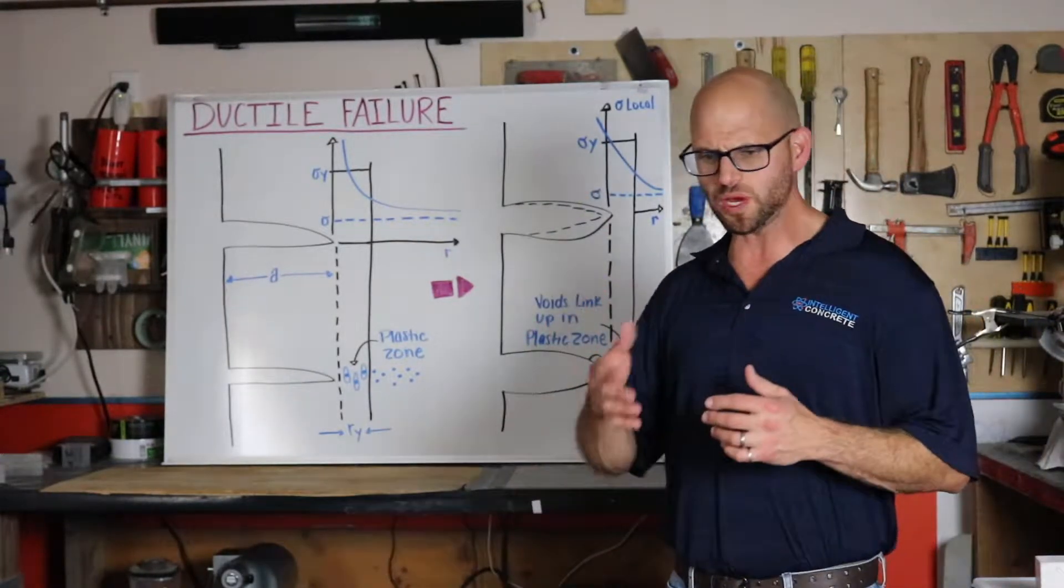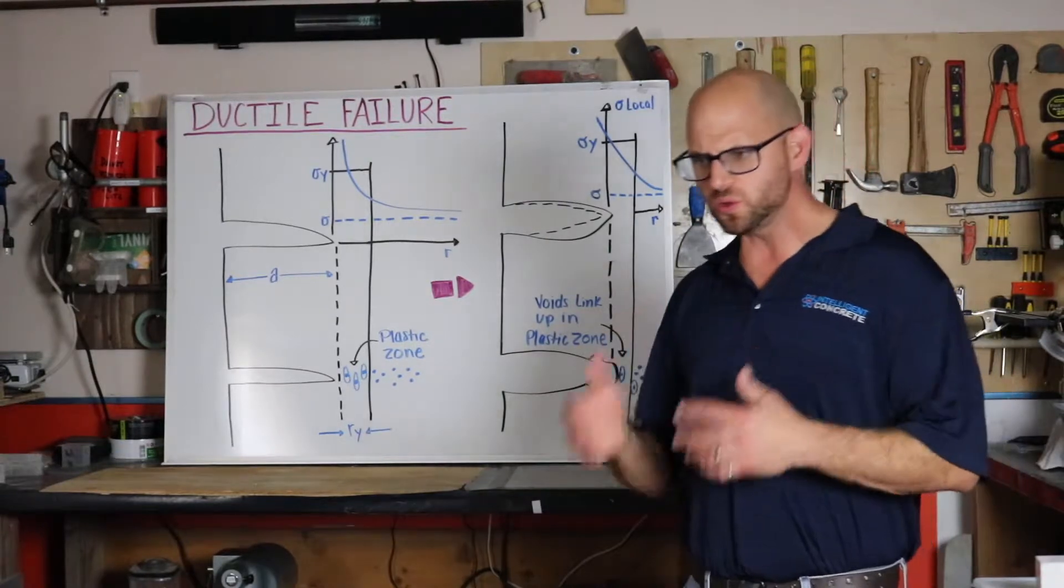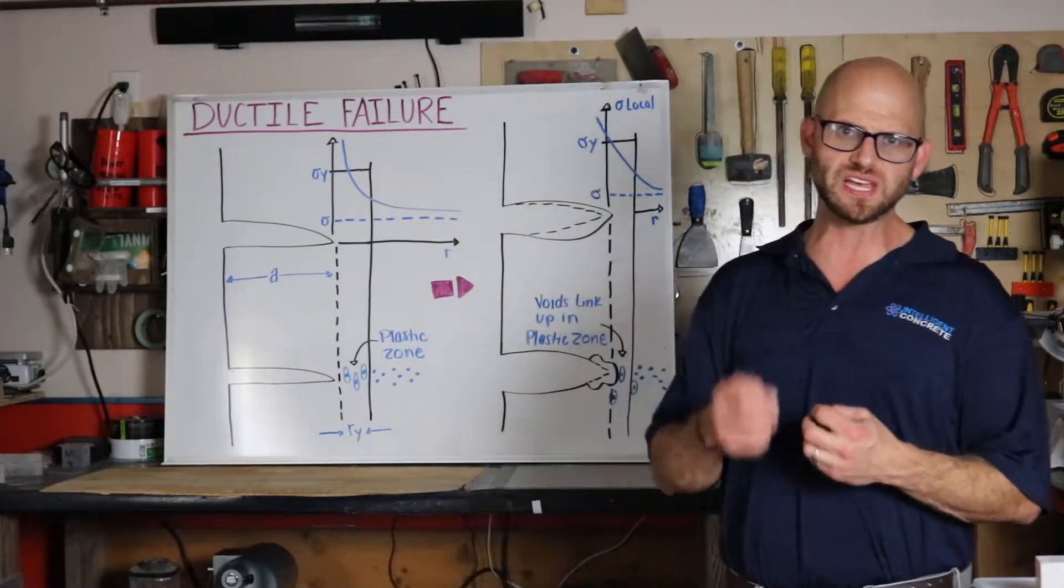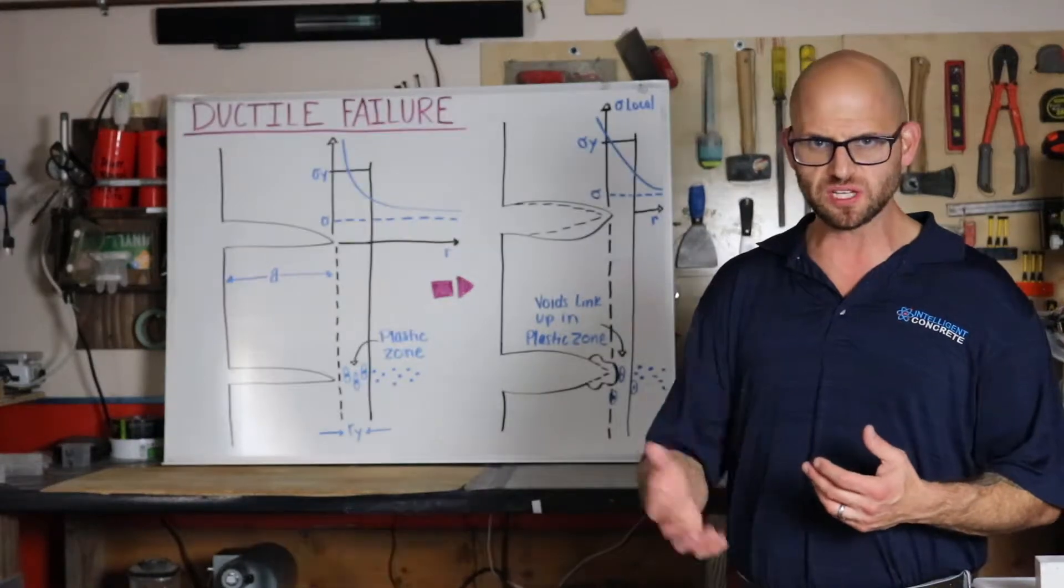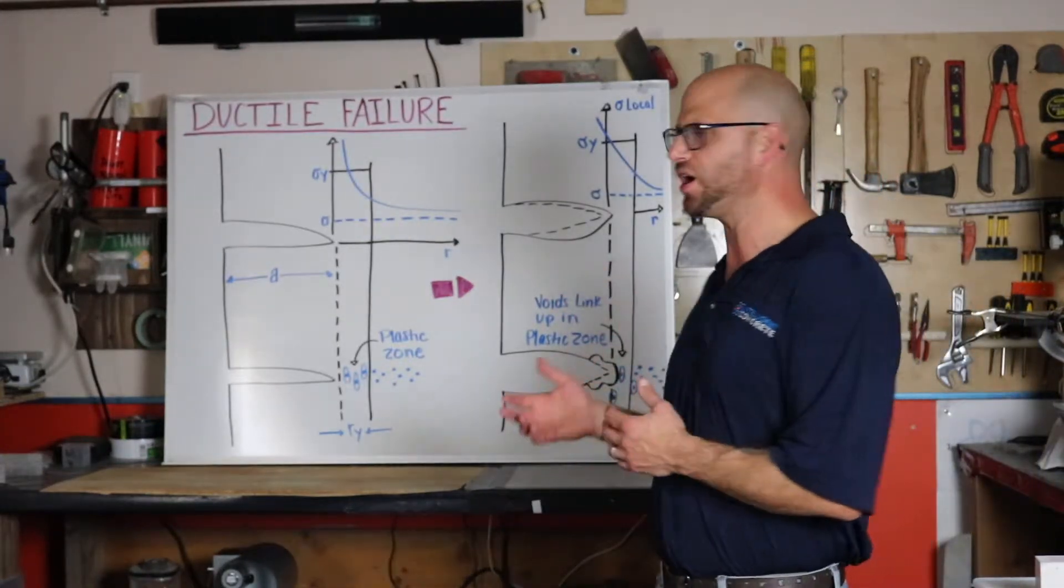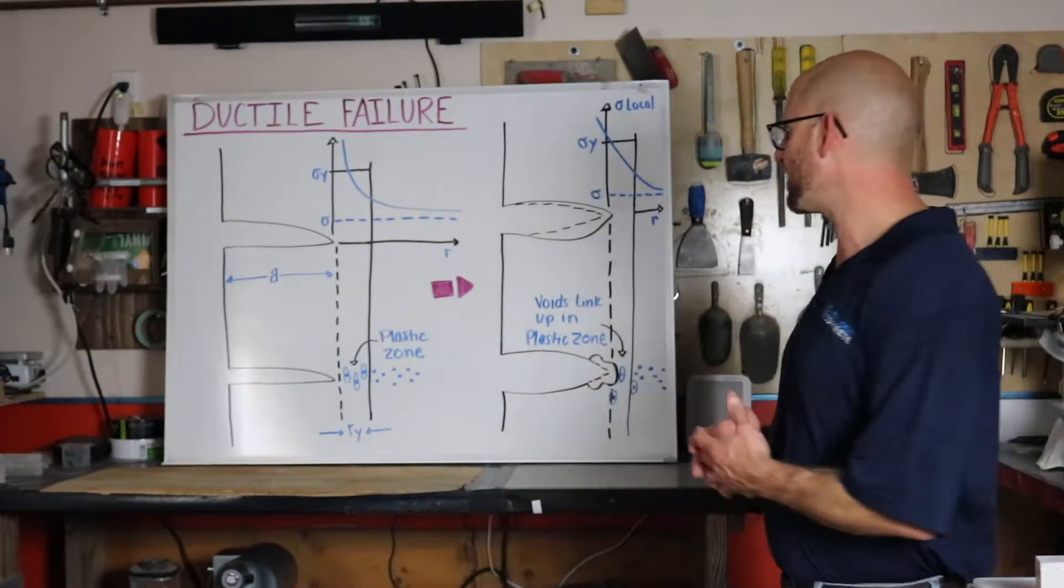The difference being when a steel or aluminum fails, it's more of a tearing, slow failure or ductile failure, tougher failure compared to your concrete, which is more of a ceramic type failure.